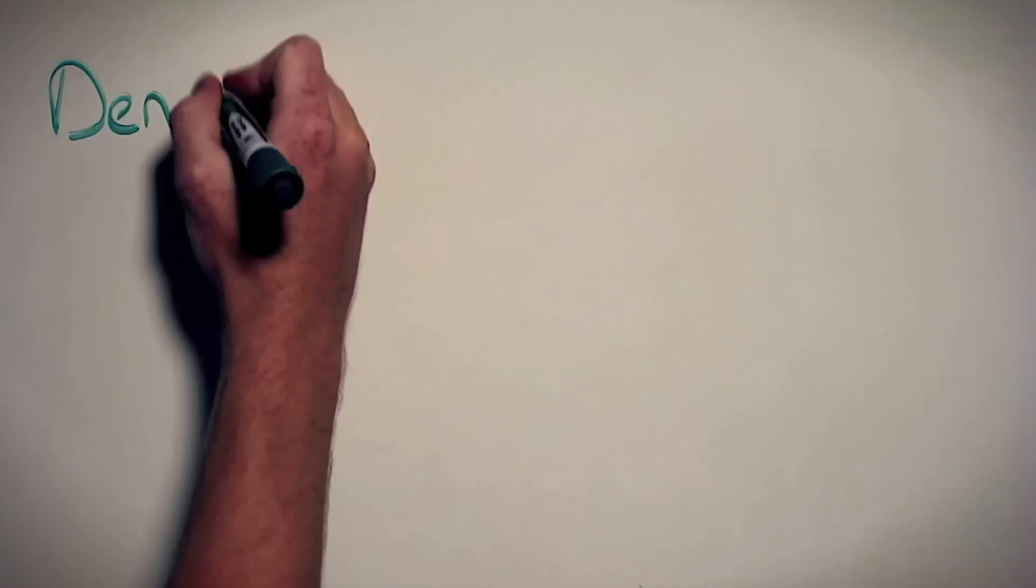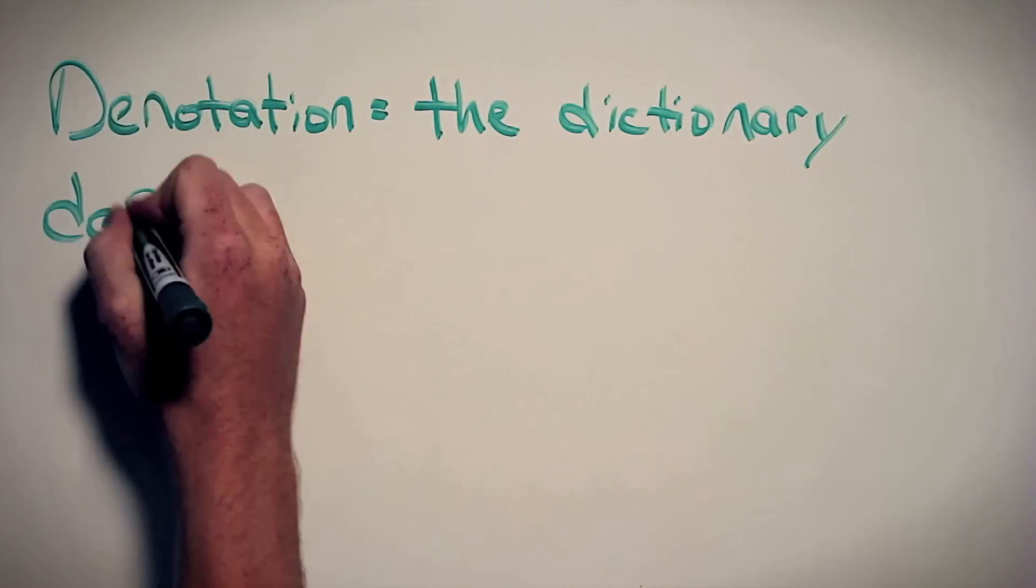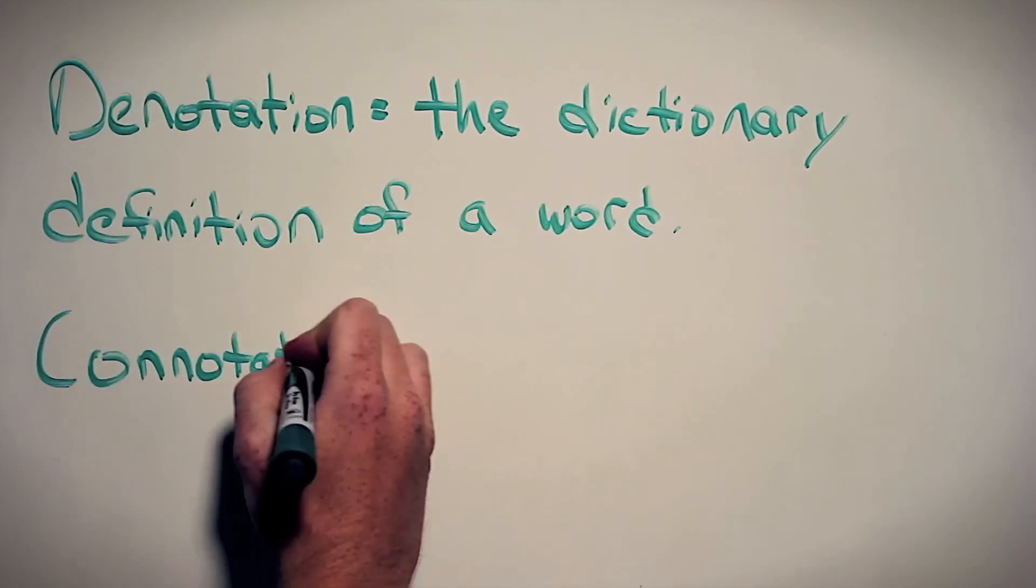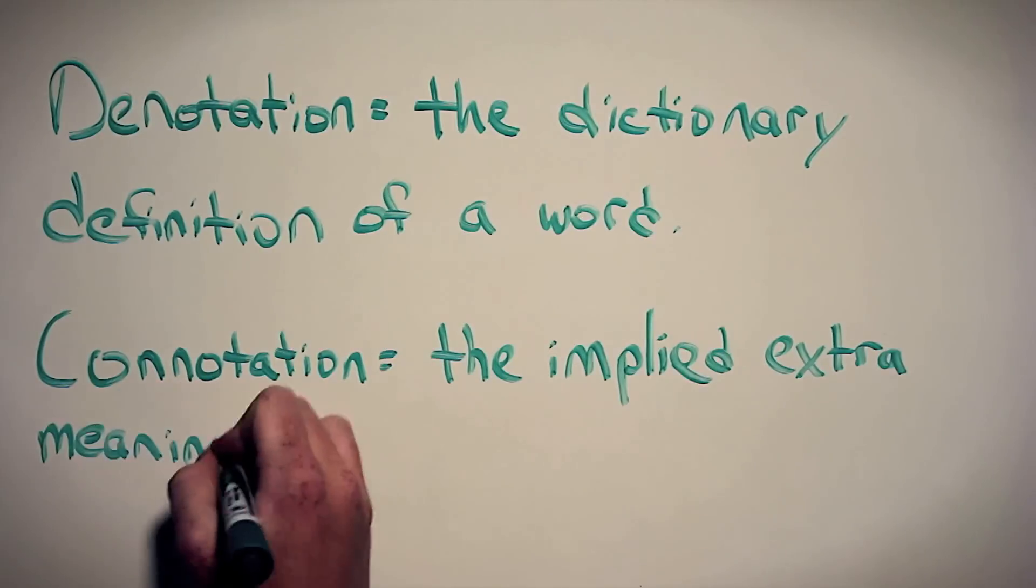Phyllis is just as obese as Kevin, but describing her as thick-set sounds a whole lot better. This is connotation, an implied extra meaning that comes with a word. Like Michael said, denotation is the dictionary definition of a word, and connotation is the implied extra meaning that comes with the word.